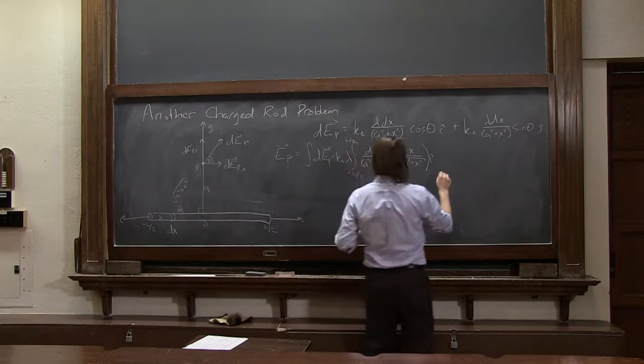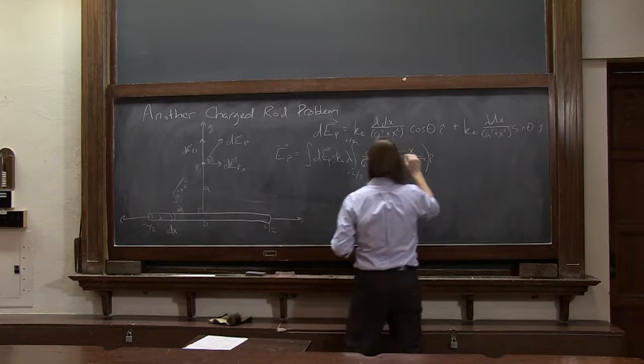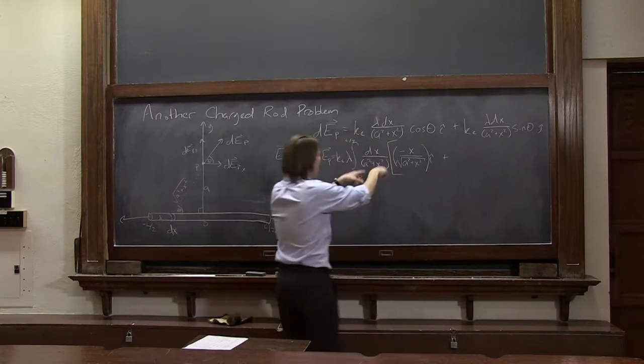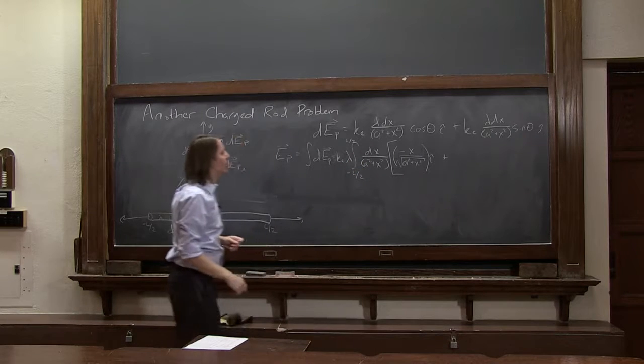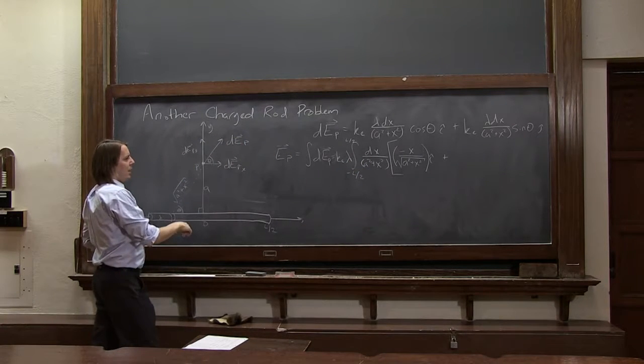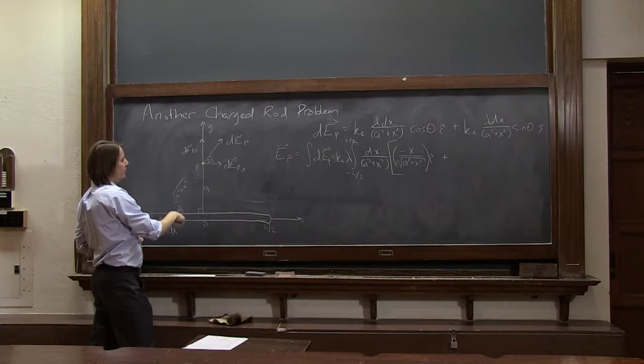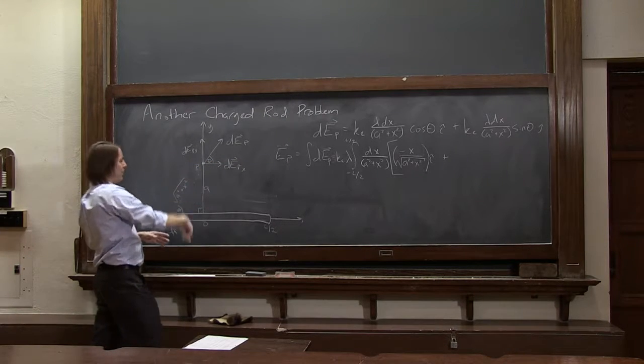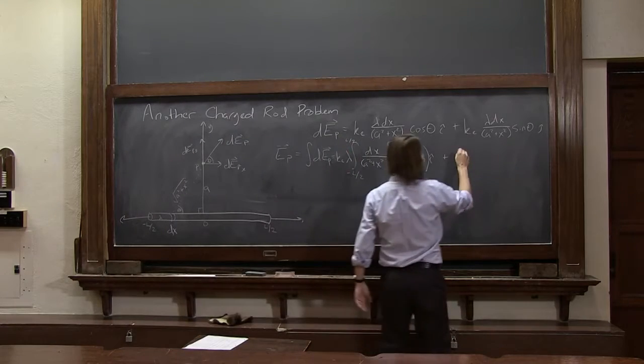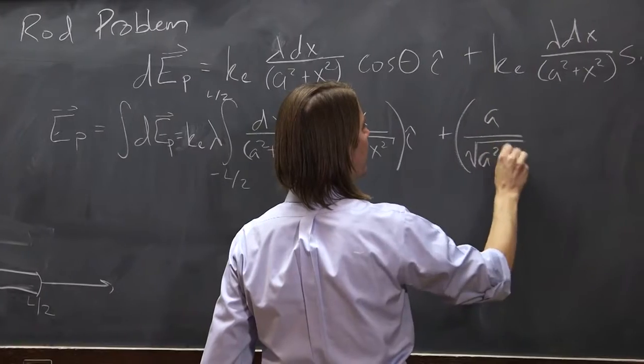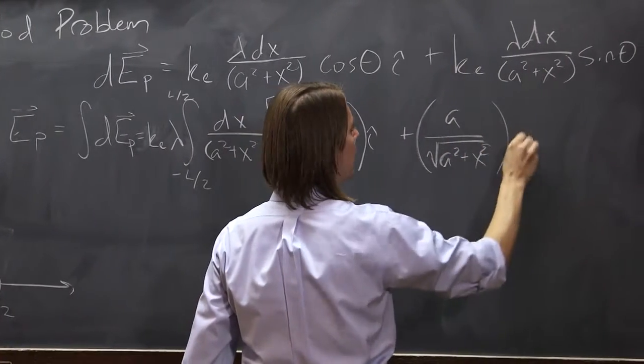The j component would be basically the same thing. In fact, I'm going to put a bracket there. It's that same amplitude in front, dx over a squared plus x squared times the sine of theta. And the sine of theta is opposite over hypotenuse. So here there's no plus minus to worry about. It's just a over the square root of a squared plus x squared, j hat.